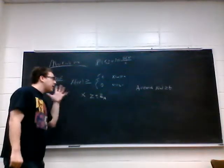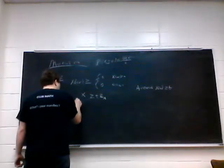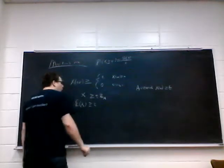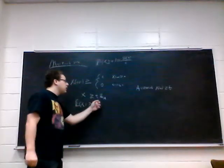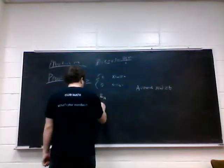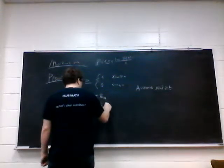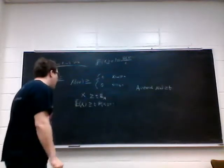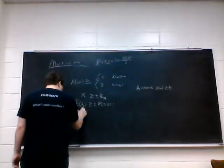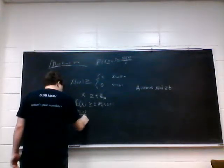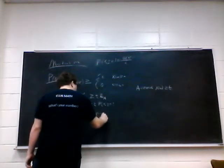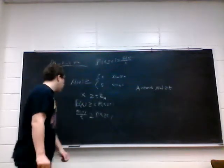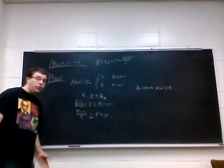Now, we take the expected value on both sides and get that the expected value of X is greater than or equal to t times the expected value of the indicator function of A. Well, the expected value of the indicator function of A is just the probability that X is greater than or equal to t. Now, if we just clean it out we get the expected value of X over t is greater than or equal to the probability that X is greater than or equal to t. That is the same as what we wanted to show, so we are done. That's how you prove Markov's Inequality.